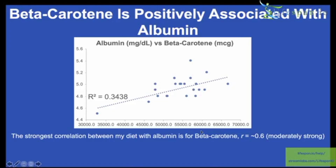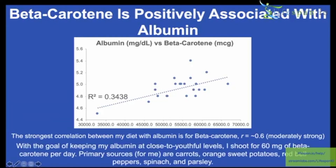I don't supplement with beta carotene. For me, primary sources of beta carotene are carrots, orange sweet potatoes, red bell peppers, spinach, and parsley. So I eat a ton of that stuff to get enough beta carotene to potentially keep my albumin levels high.